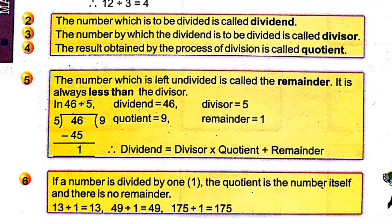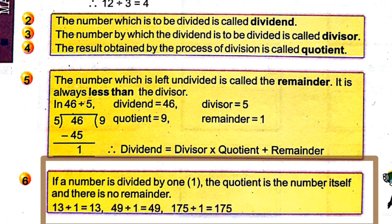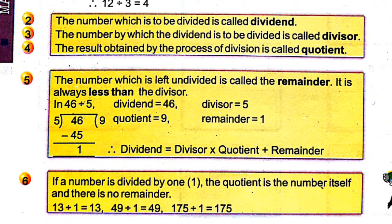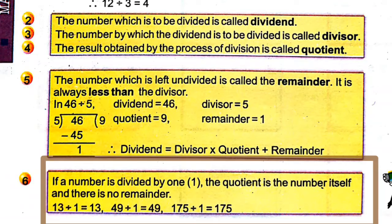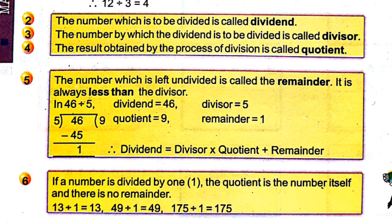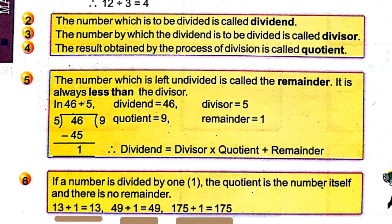Fact number 6: if a number is divided by 1, the quotient is the number itself and there is no remainder. For example, 13 divided by 1 gives quotient 13 with no remainder. 49 divided by 1 gives quotient 49, no remainder. 175 divided by 1 gives quotient 175, the number itself, with no remainder.